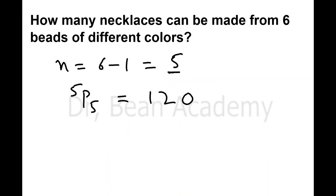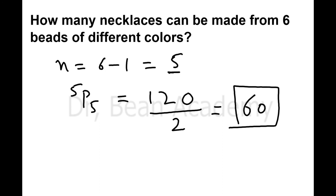To handle this, we divide by 2 to remove the duplicate reflection permutations. So the actual number of different necklaces is not 120 but 120 divided by 2, which equals 60. We can make 60 different designs of necklaces from six beads of different colors.